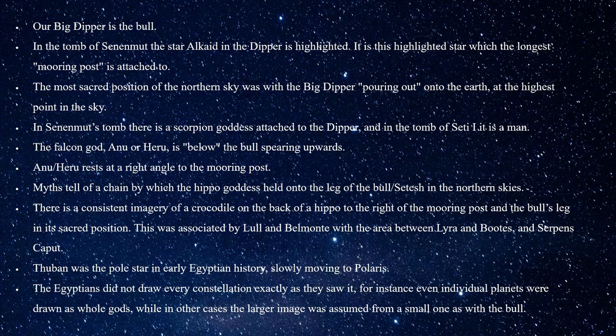So taking these maps, what is it that we know for sure? As stated, we already know our Big Dipper is the bowl. In the tomb of Senmut, the star Alcaid in the dipper is the highlighted star to which the long mooring post is attached. The most sacred position for the sky here in the north was with the Big Dipper pouring out onto the earth — so with Alcaid to the far right, it's kind of upside down if you view it as a ladle, like we tend to in the west — so it would be pouring out onto the earth.